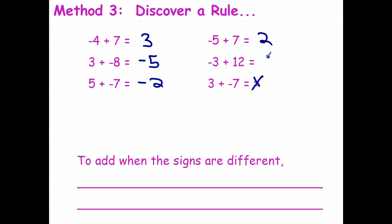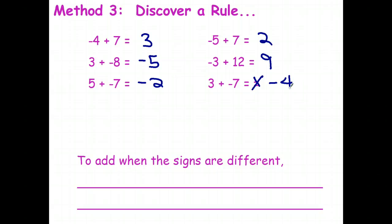Here I'm $9 to the good — I've got $12 that pays off my bill of $3, leaving me $9. And I've got a bill for $7 plus $3, so I still owe $4.